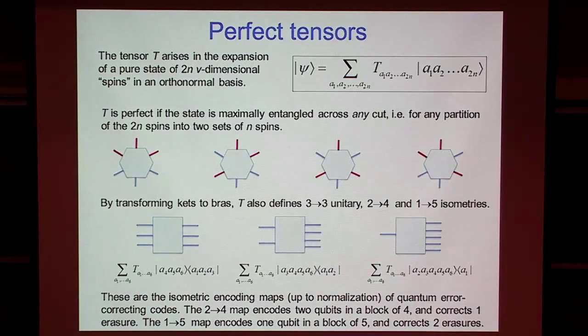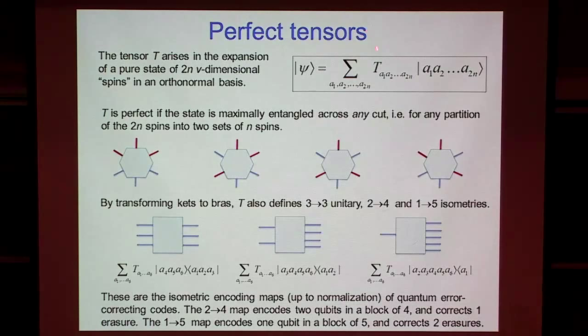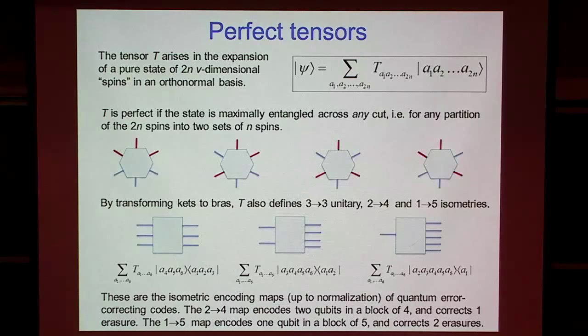So now let's see how the codes are built. The central concept in the constructions is what we call a perfect tensor. Suppose we consider a pure quantum state of 2N spins where each spin is V-dimensional. I can expand that pure state in terms of an orthonormal basis, and that defines a tensor with 2N indices each of which takes V values. We say that tensor is perfect if for any way of choosing N of the spins, those N will be maximally entangled with the complementary N spins. For our code constructions we're going to consider the case where we have a perfect tensor of six qubits. It's not obvious that such a quantum state exists, but it does: there is a quantum state of six qubits such that any three of the six are maximally entangled with the complementary three.